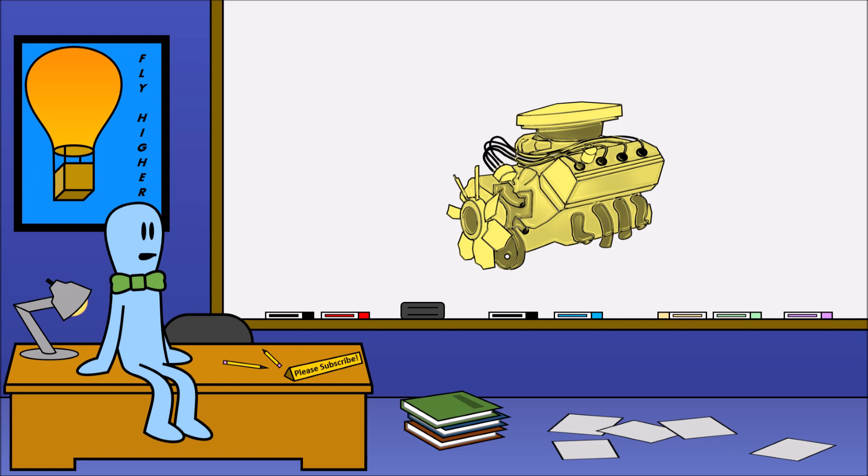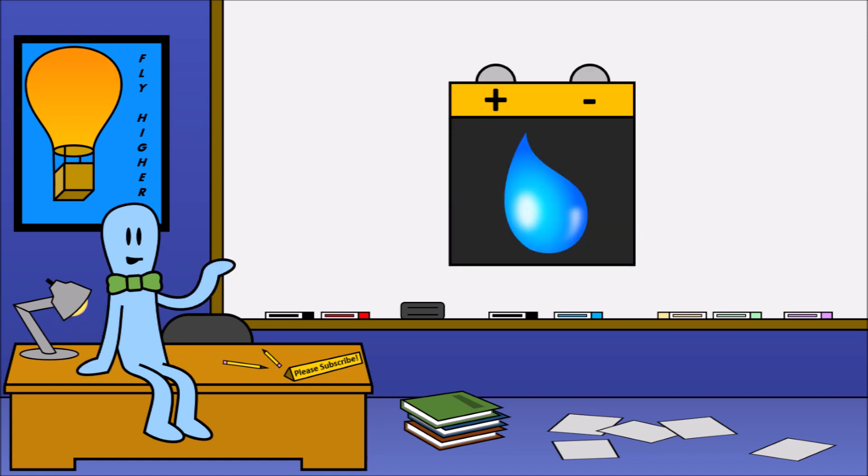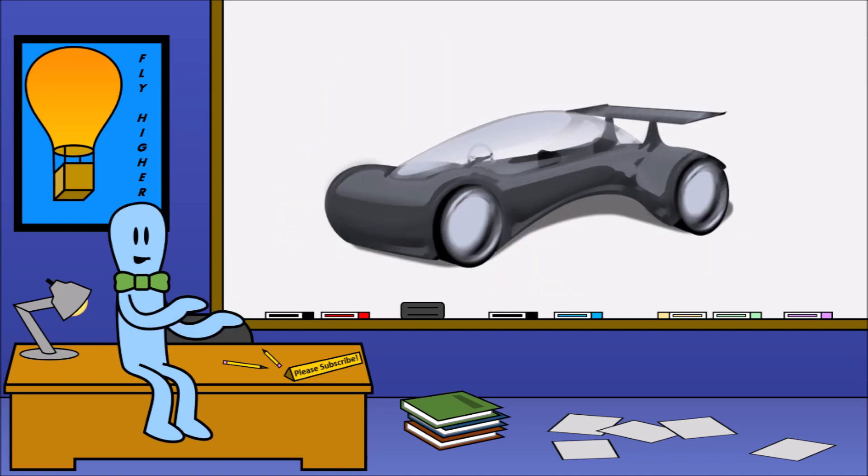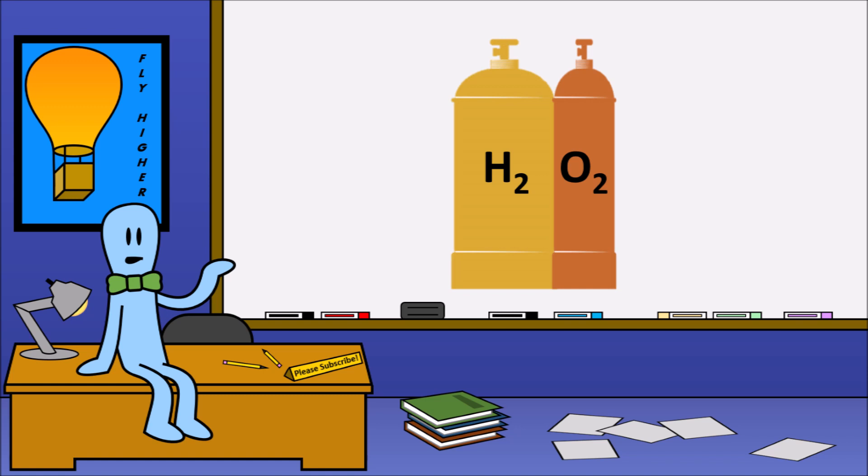Even if we made the most efficient engine in the world, the most we could theoretically get from this water-powered engine is the same amount of energy that we put in to begin with. Now, this could be a good system for storing energy. You could split the water now and use its elements for fuel later. That's even the idea behind hydrogen cars. The hydrogen acts like a battery that turns back into water when its energy is used up.